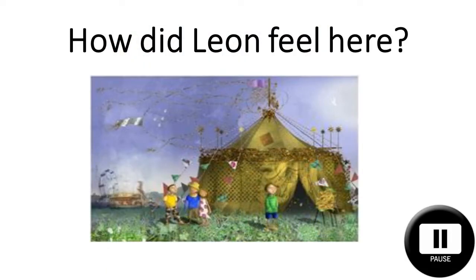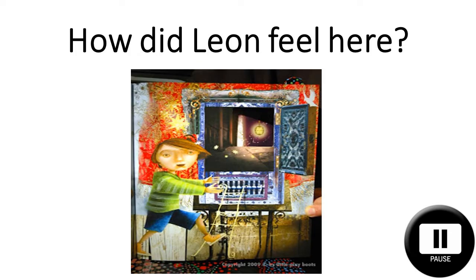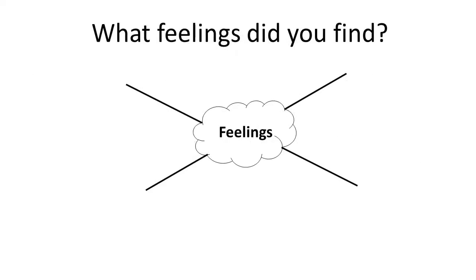Look at the image on the screen. How did Leon feel here? And finally, look at this image. How did Leon feel here? Time for a quick task. In your home learning book, using a mind map, write all the feelings Leon might have felt during the story so far. So what feelings did you find? Make sure you share these now with your home teacher.